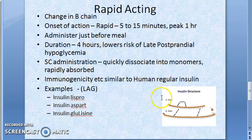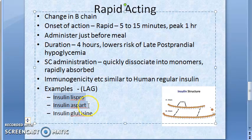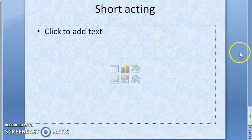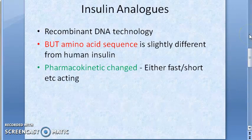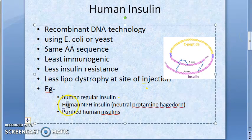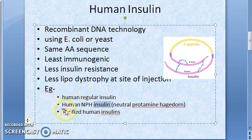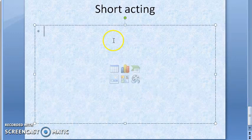In the last video we looked at rapid-acting insulin preparations — insulin lispro, insulin aspart, and insulin glulisine. In this video we want to look at short-acting insulin preparations. Before that, just to clarify: NPH insulin stands for Neutral Protamine Hagedorn insulin.